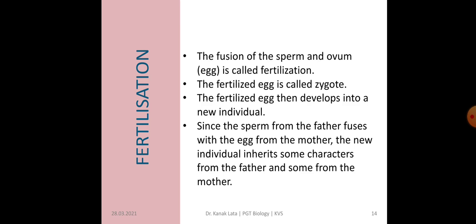The next topic is fertilization. Fertilization is the process by which there is fusion of a sperm and an ovum, that is the egg. After fertilization, a single-cell structure called the zygote is formed. From the fertilized egg, the zygote develops into a new individual by division and redivision. Since the sperm from the father fuses with the egg from the mother, the new individual after sexual reproduction inherits the characters of both the father and the mother.